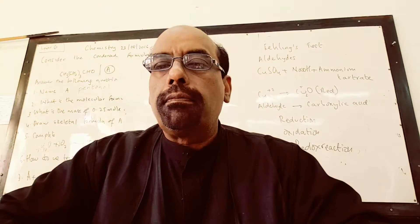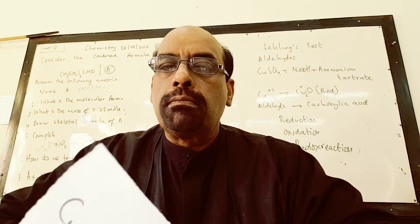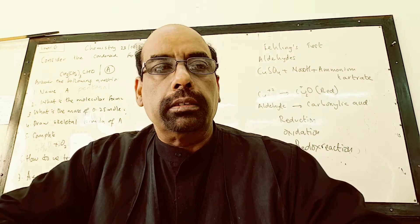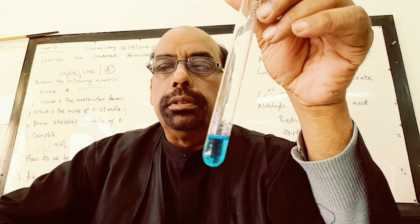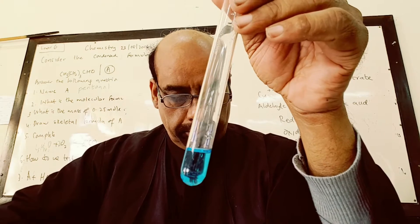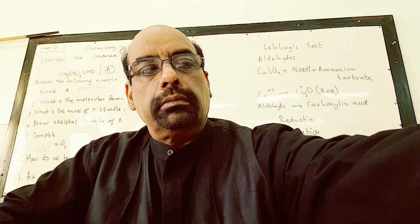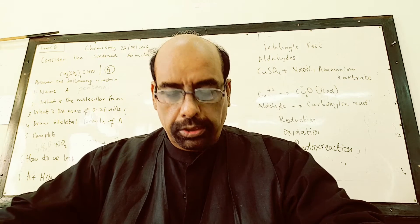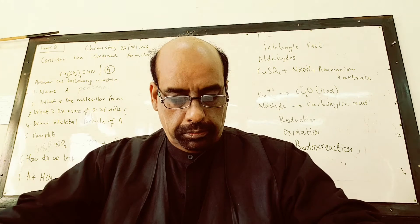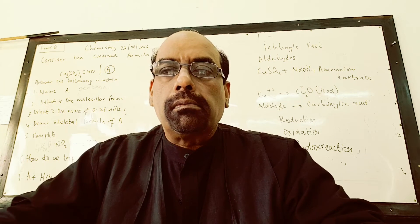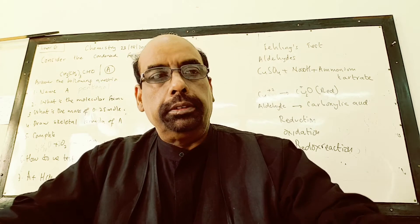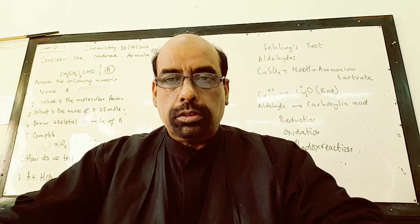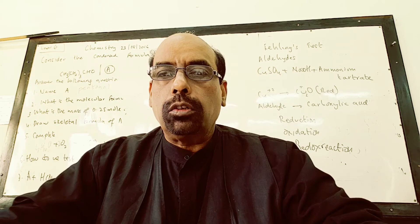Fehling's solution is a mixture of copper sulfate, sodium hydroxide, and potassium sodium tartrate. It contains complex copper ions. The tartrate is added in order to prevent precipitation of copper oxide. A blue solution is obtained — this is Fehling's solution, an alkaline solution of complex copper ions.